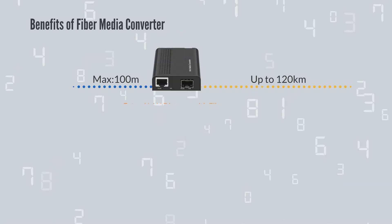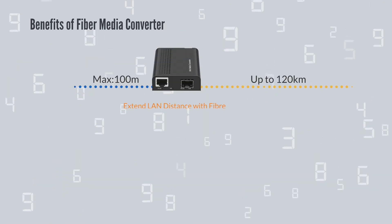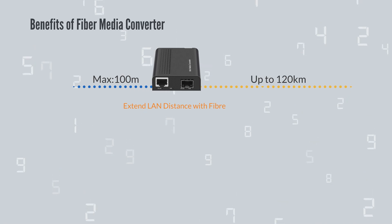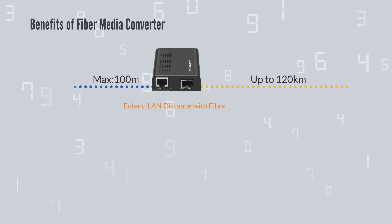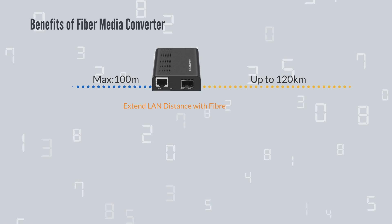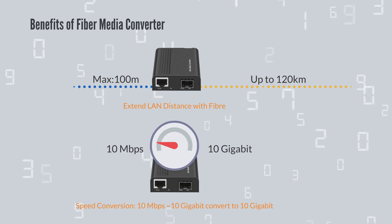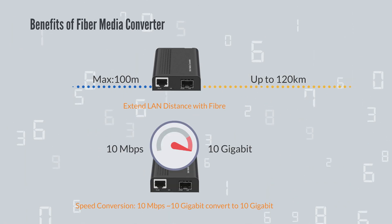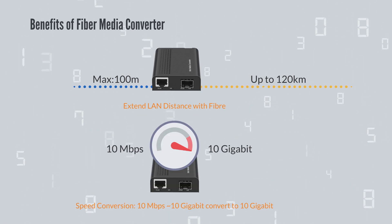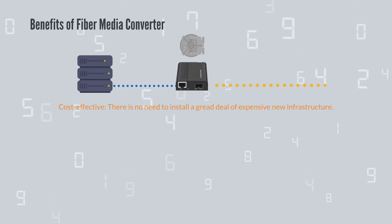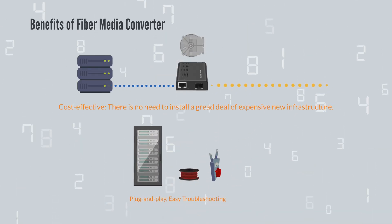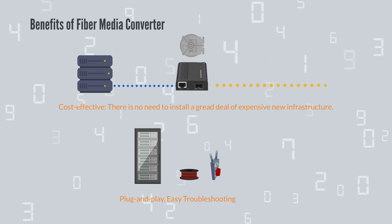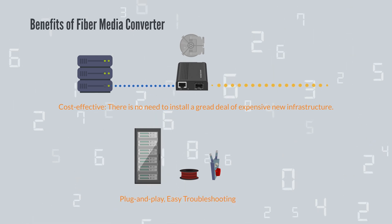By using Ethernet to fiber conversion, you can extend link distance up to 120 kilometers. Media converters allow you to convert link speeds from 10 megabits per second to 10 gigabit. Media converters allow users to integrate new equipment into an existing cable infrastructure with increased quality and strength.